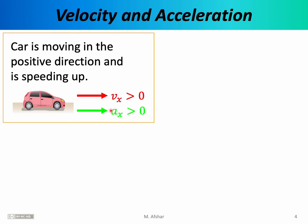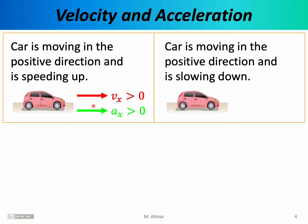Here's a different scenario: a car moving in the positive direction as before, but this time it's slowing down — the driver is applying the brakes. The velocity vector again points to the right because the car is moving to the right. However, the acceleration vector now points to the left. The car is slowing down, its velocity vector is getting shorter, so its speed is decreasing and the acceleration must point in the negative direction. We could say the x component of velocity is positive while the x component of acceleration is negative. This situation is sometimes described as deceleration, although it's more common to simply say the acceleration is negative.